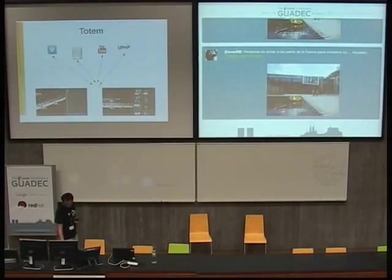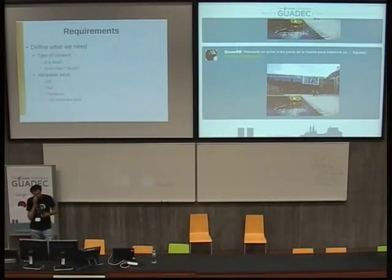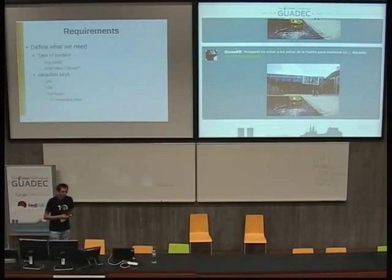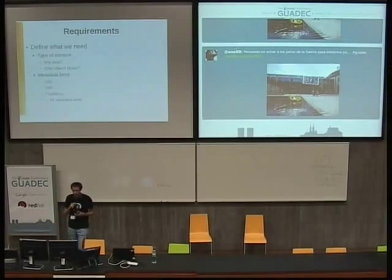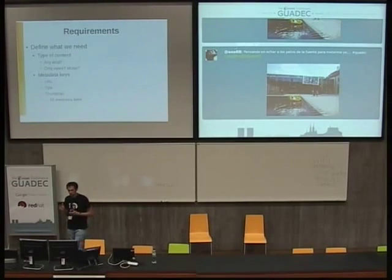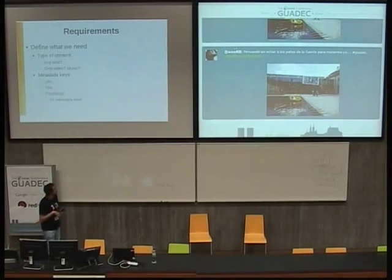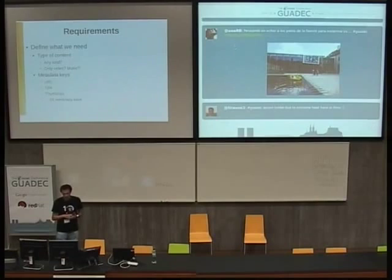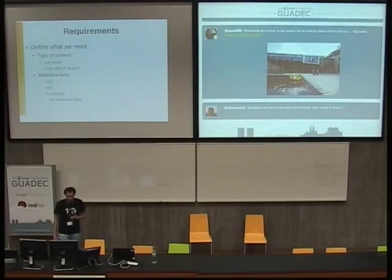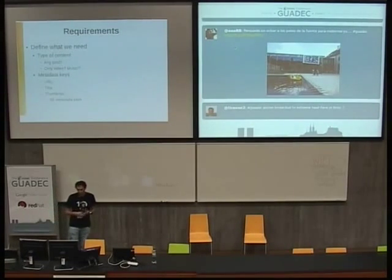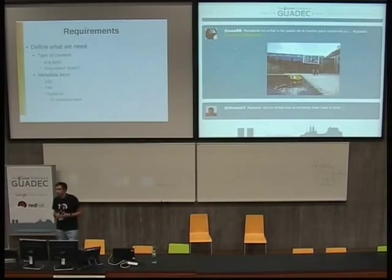When you are using Grilo to write Totem, there are some things to keep in mind. The first is what you want to show — only videos, only music — that depends on your application. Totem was previously showing both, but now it's moving to show only video content. You also need to define which information you want to handle for that content. In Grillo there are up to 55 different types of information you can handle, and sources can even add new types of information.